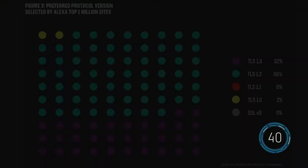And TLS 1.3 has seen rapid adoption and is now accepted by 32% of the websites in the Alexa top 1 million.